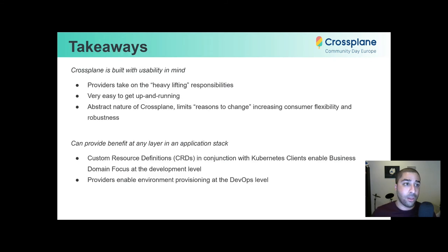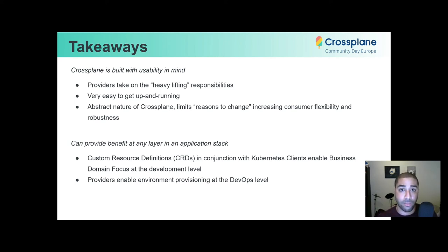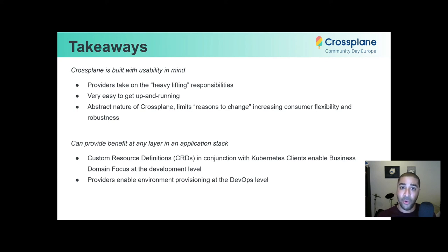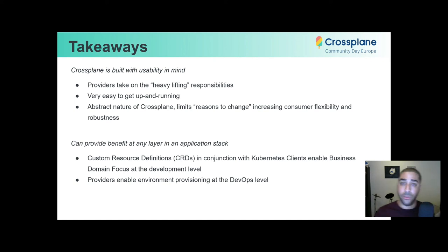So with that, some major takeaways from this quick talk: Crossplane was built with usability in mind. I can attest to this with experimenting with Crossplane — I've been taken aback by how great a product or tool this is. These providers are doing all of the work we want them to do. When you're given the task to support a new cloud, nobody wants to do all the lifting and boilerplate to get it running. We know Kubernetes clusters are the same across different clouds, so why not leverage Crossplane to do the provider implementations and generate these clusters on different clouds?